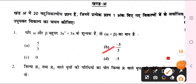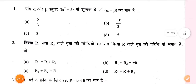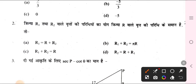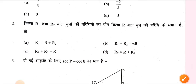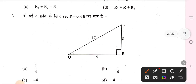For question number 2, the answer will be option C — R1 plus R2 is equal to R. For question number 3, the correct answer is A — 1 by 4.